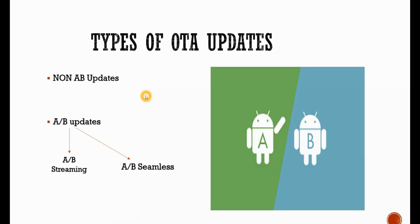There are different types of OTA updates: non-AB OTA updates and AB OTA updates. These are the two different types. Under AB OTA updates, there is AB streaming and AB seamless updates. We'll dig deeper and see what is non-AB and what is AB, and under AB updates, what is the streaming and seamless updates.